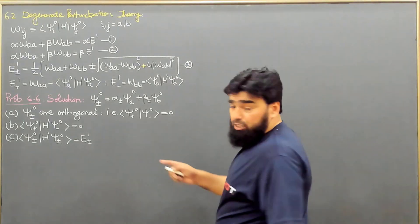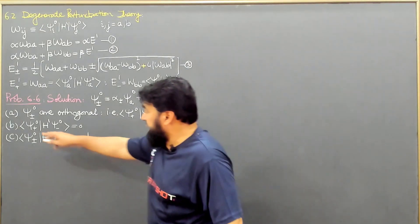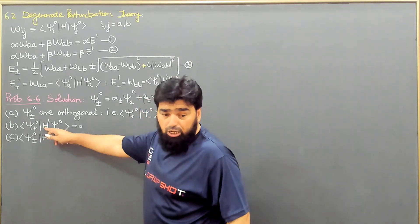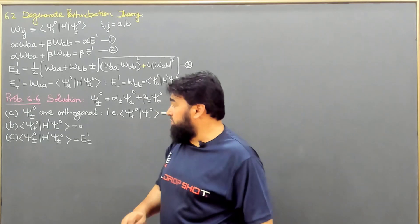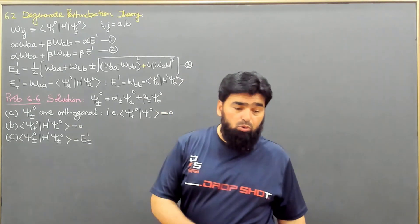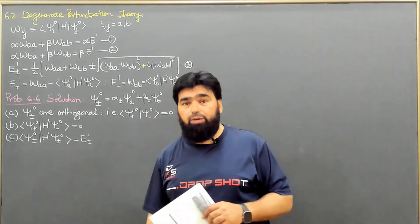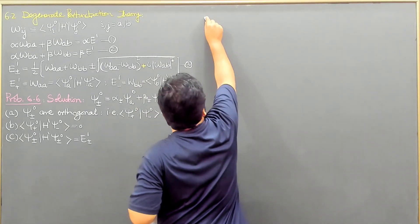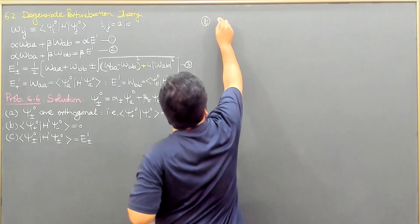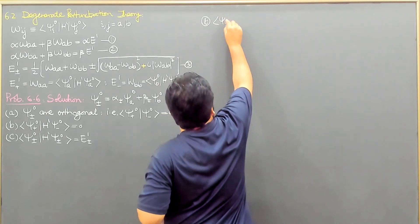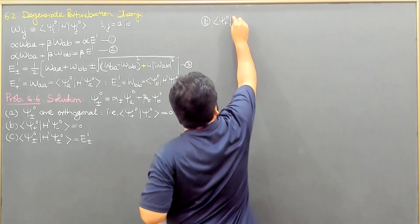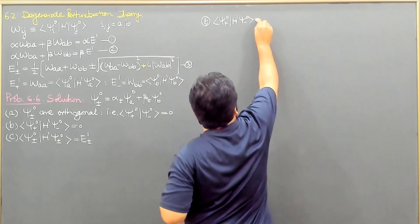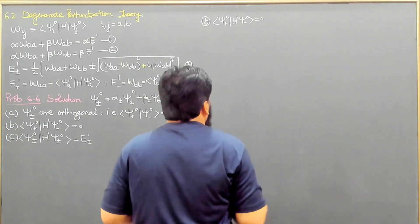In part B, we have to prove that ⟨ψ⁺⁰|H'|ψ⁻⁰⟩ is also equal to 0. So we need to prove this.